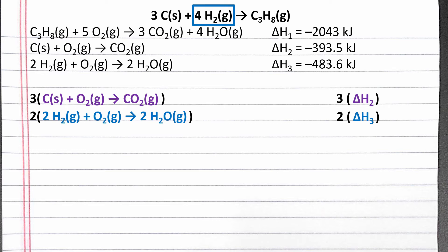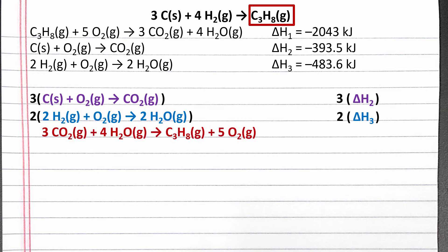This gives us four moles of hydrogen gas as a reactant. Our last substance in our overall reaction is propane gas. Propane only shows up in the first reaction, but it shows up as a reactant instead of a product. We want one mole of propane as a product, so we need to reverse the first given equation so that the reactants show up as products and the products show up as reactants. This will give us one mole of propane as a product. When we reverse a reaction, we need to multiply the enthalpy of reaction by negative one.